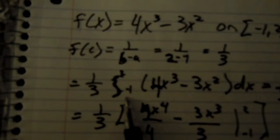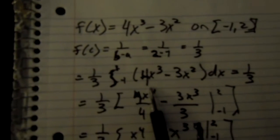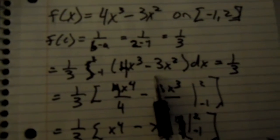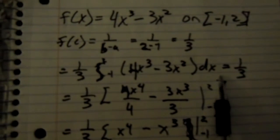So it's going to be 1 third times your integral from negative 1 to 2 times 4x to the 3rd minus 3x squared times dx equals 1 third.